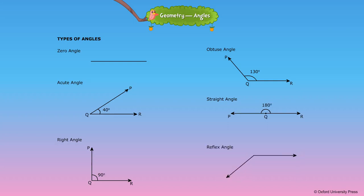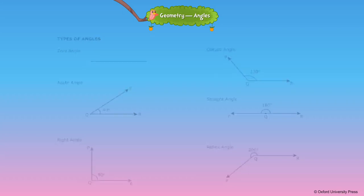Reflex angle: An angle which measures between 180 degrees and 360 degrees is called a reflex angle. For example, angle PQR equal to 200 degrees is a reflex angle.